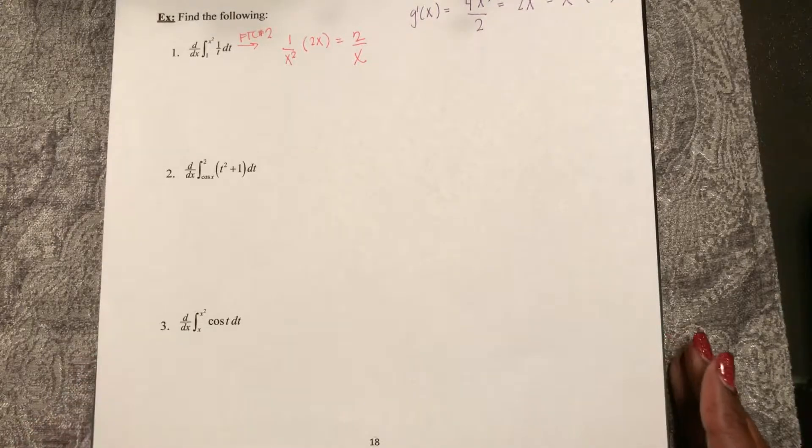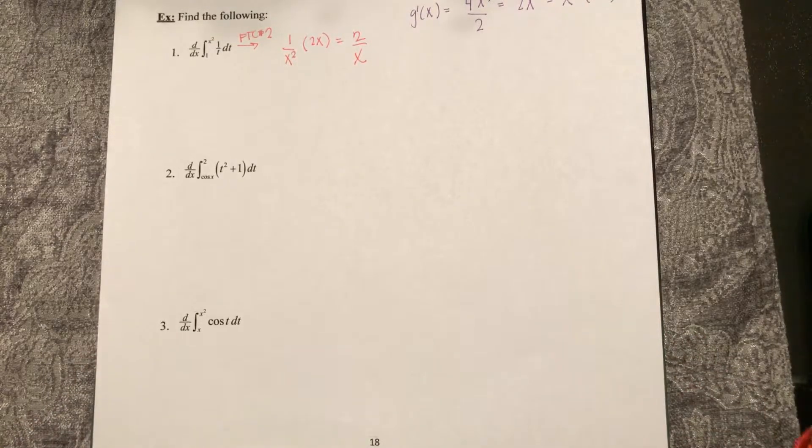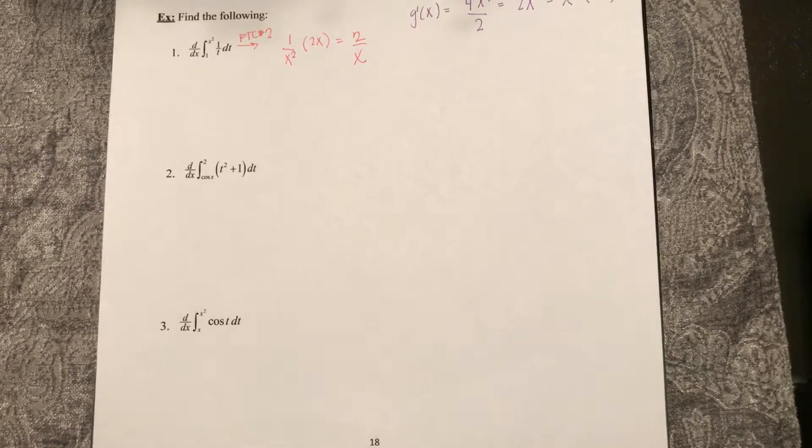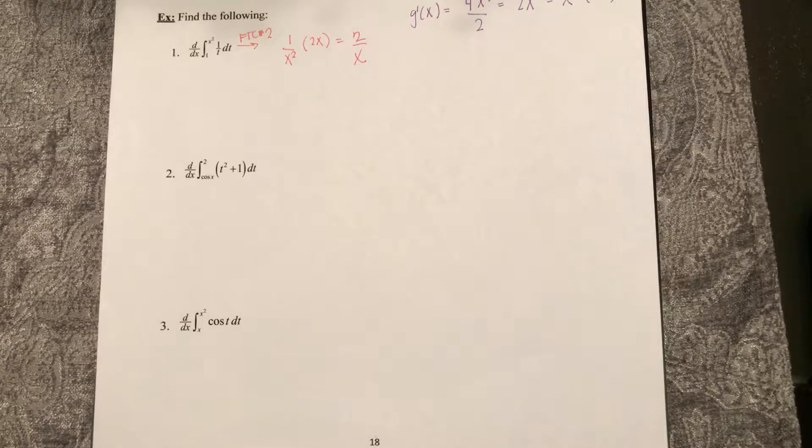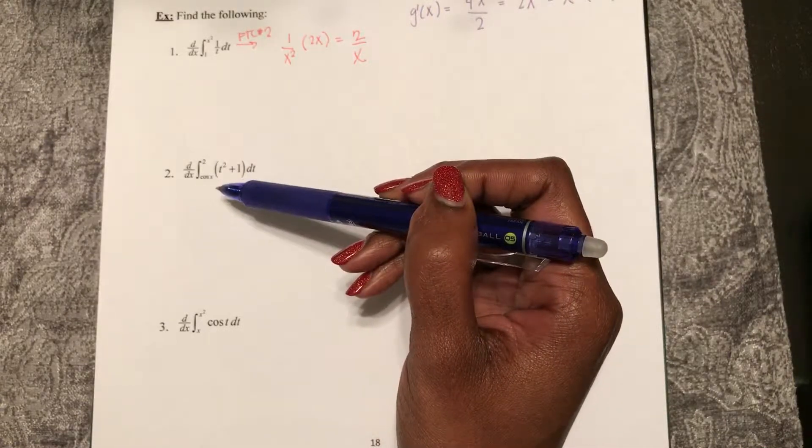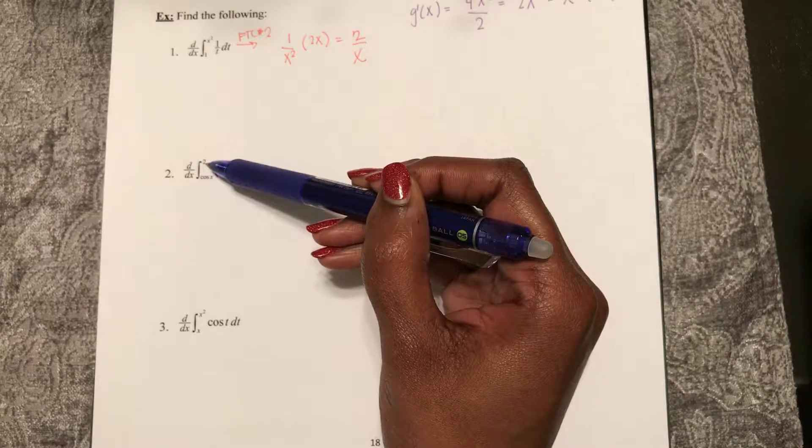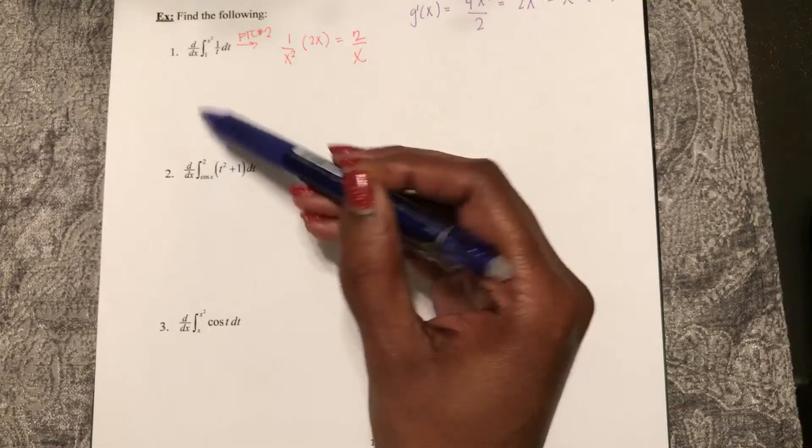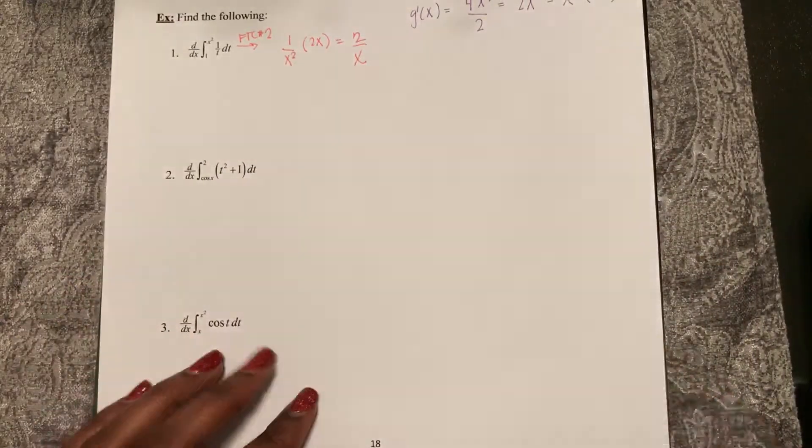Here in part d, I mean, I'm sorry, in number 2, we're trying to find the derivative with respect to x of this function, which looks very similar to FTC part 2 except for the constant is up here at top. And it should be at the bottom before we can apply it.